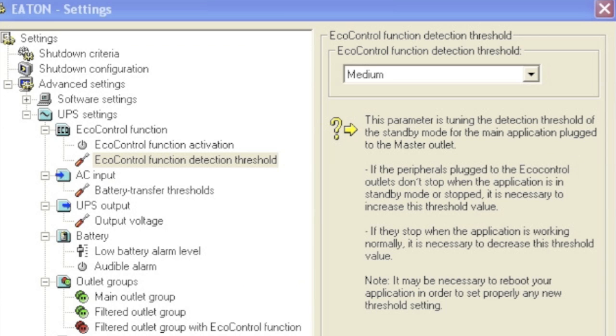Once you've selected that, you can look under the Detection Threshold option for EcoControl. Now the default value is medium, and basically if the peripherals connected to the EcoControl outlets don't stop when your master device is turned off, it'll be necessary to increase this threshold level to high. If the devices connected to those controlled by master outlets don't function when the master device is functioning properly, then you'll need to set that Detection Threshold to low.